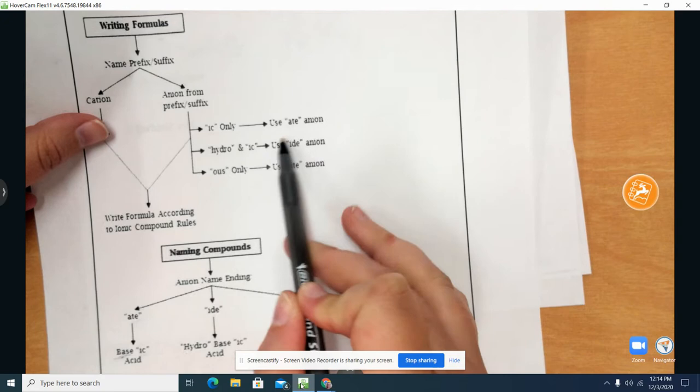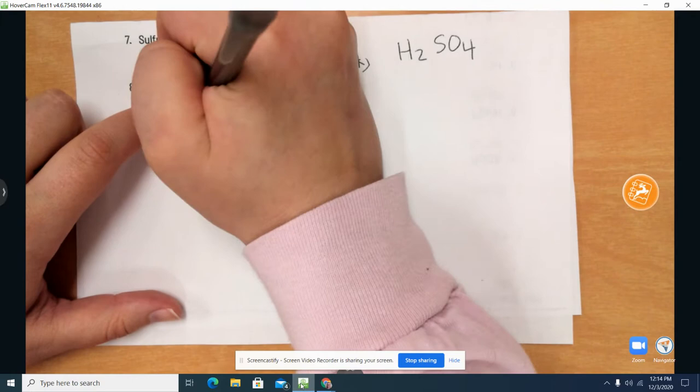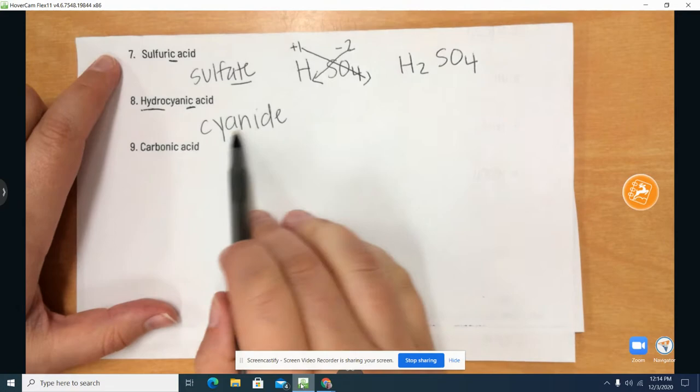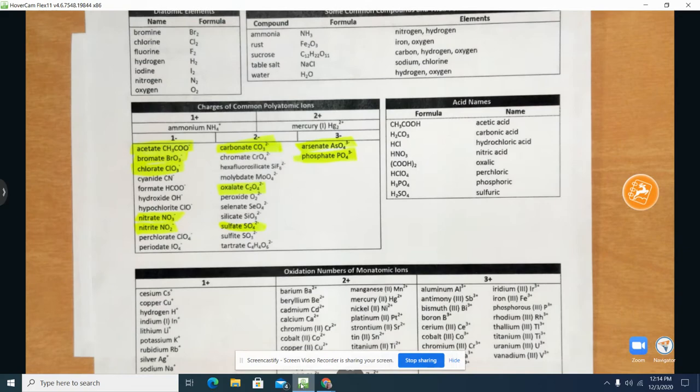So that means we have our base word here. That means it was cyanide. And this is one of our exceptions. Cyanide is actually on our cheat sheet. We have cyanide right here.